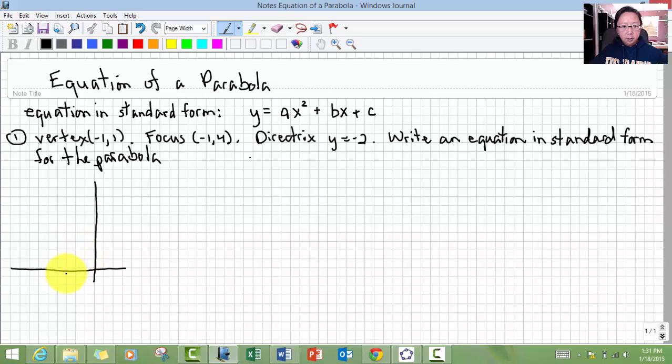So here's the vertex, negative 1, 1, which is up here. The focus is negative 1, 4. And then the directrix is y equals negative 2, which is down here. That tells me the parabola opens up.